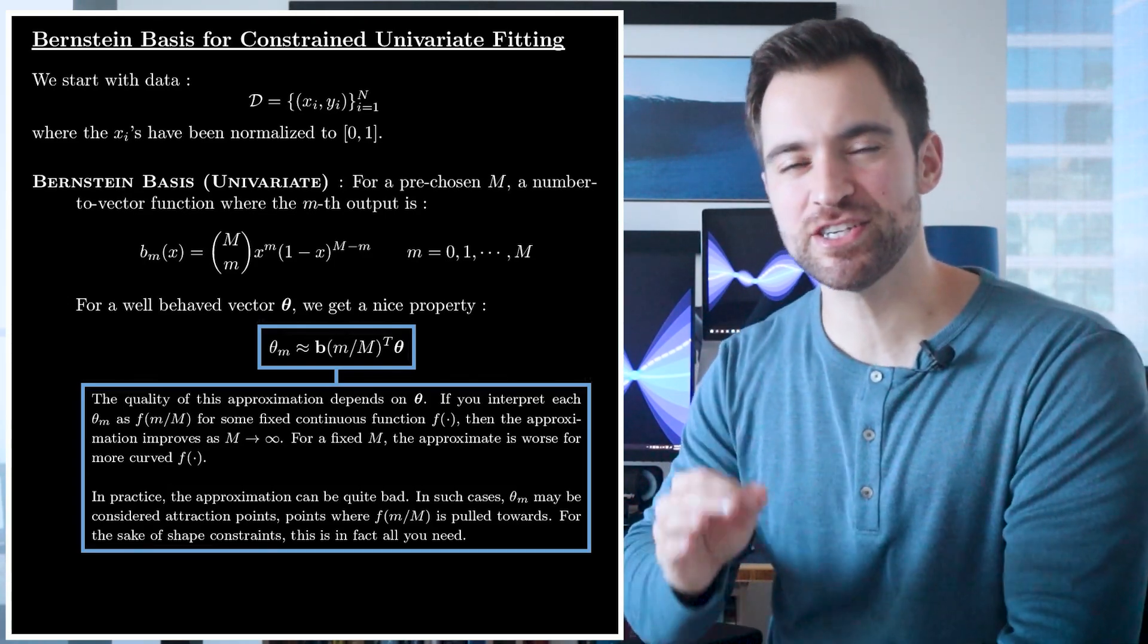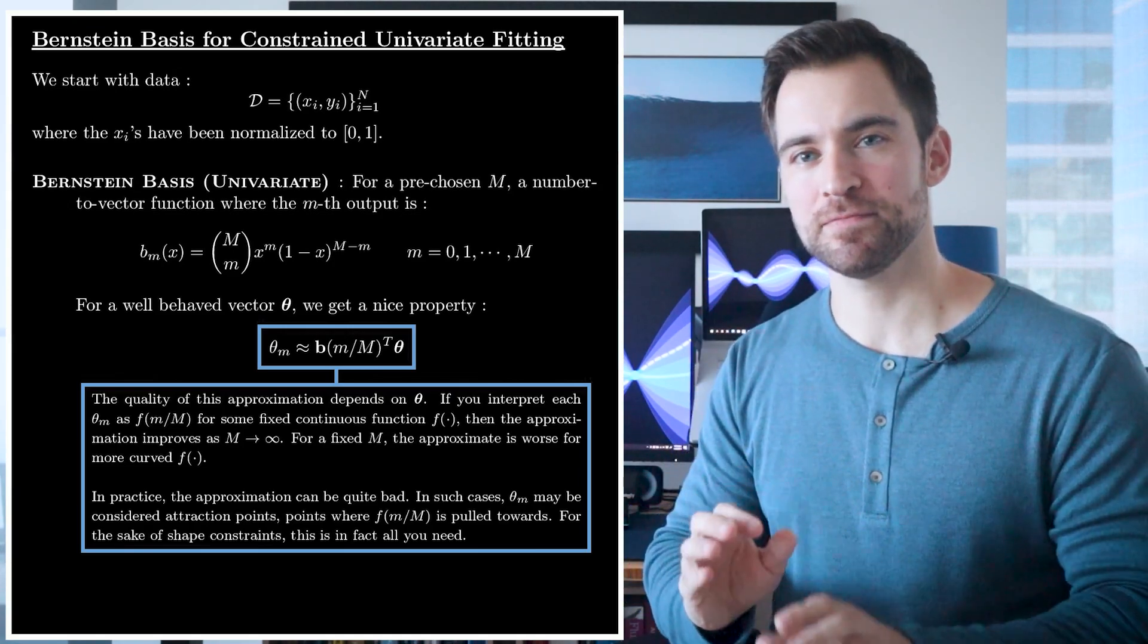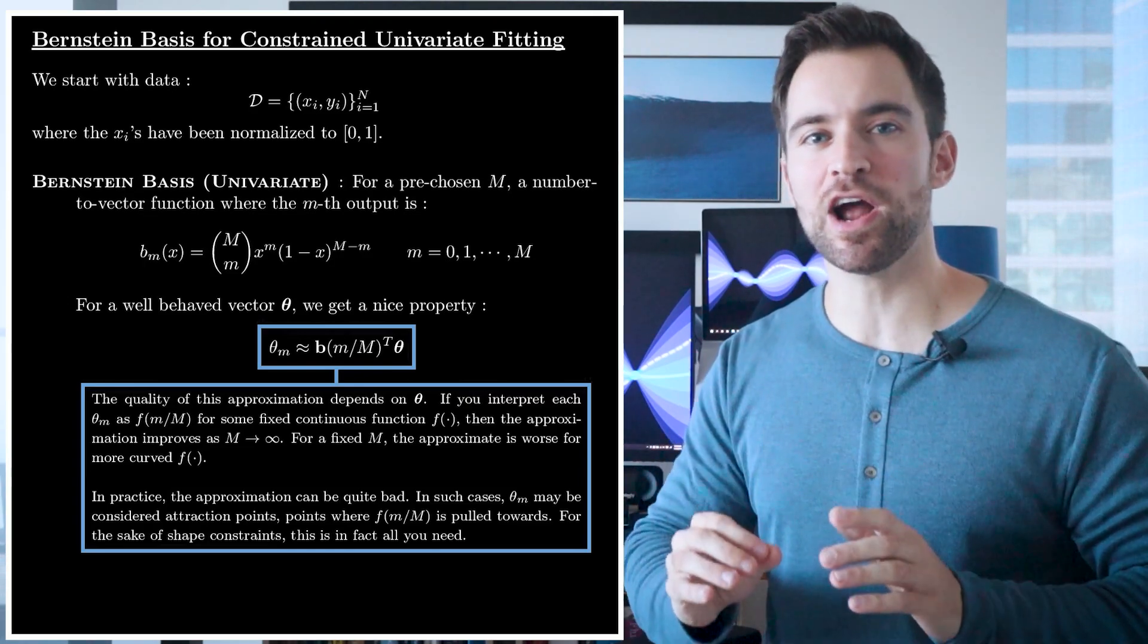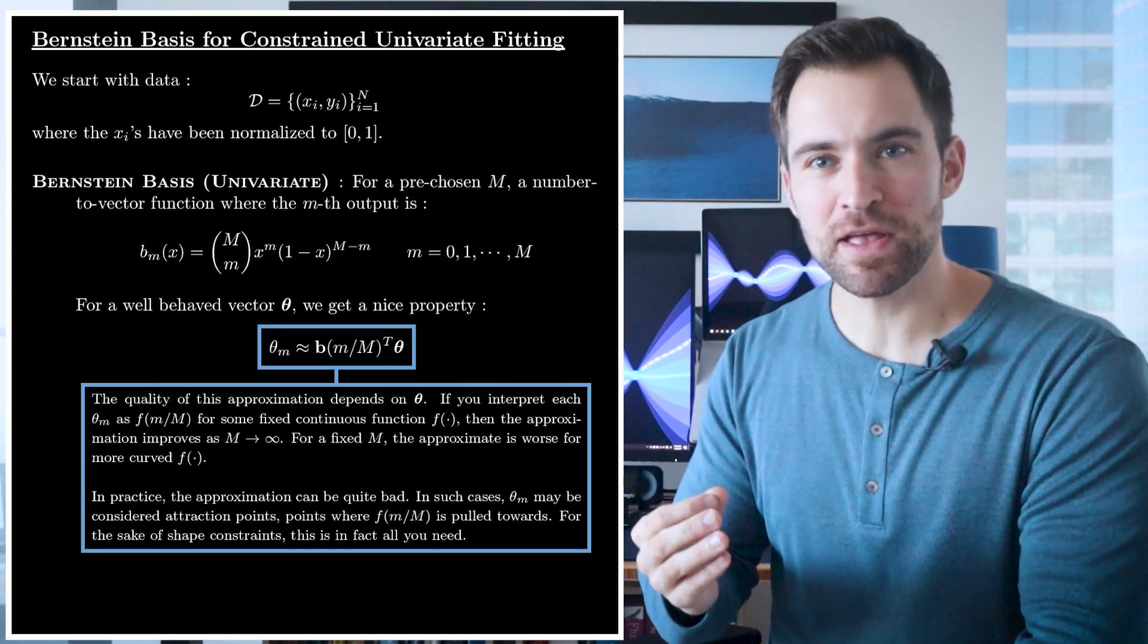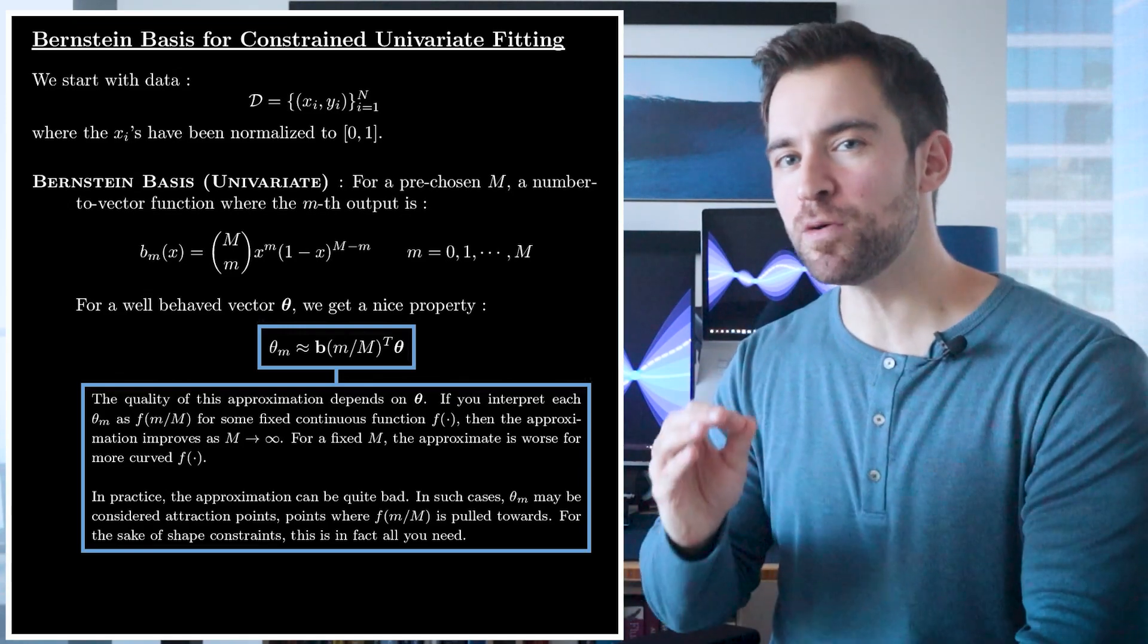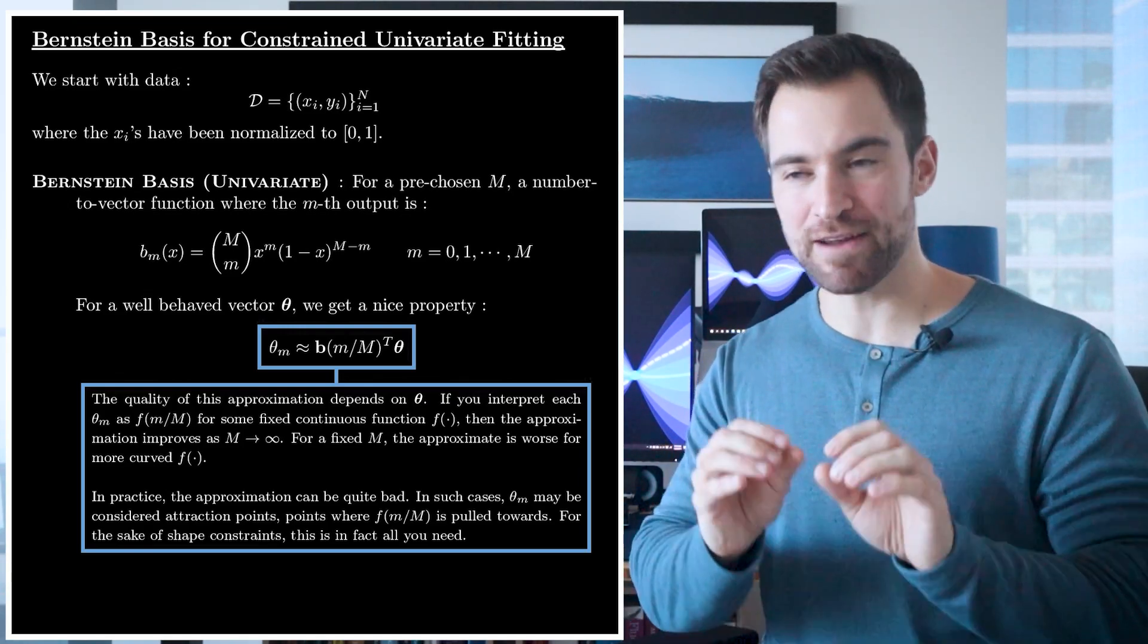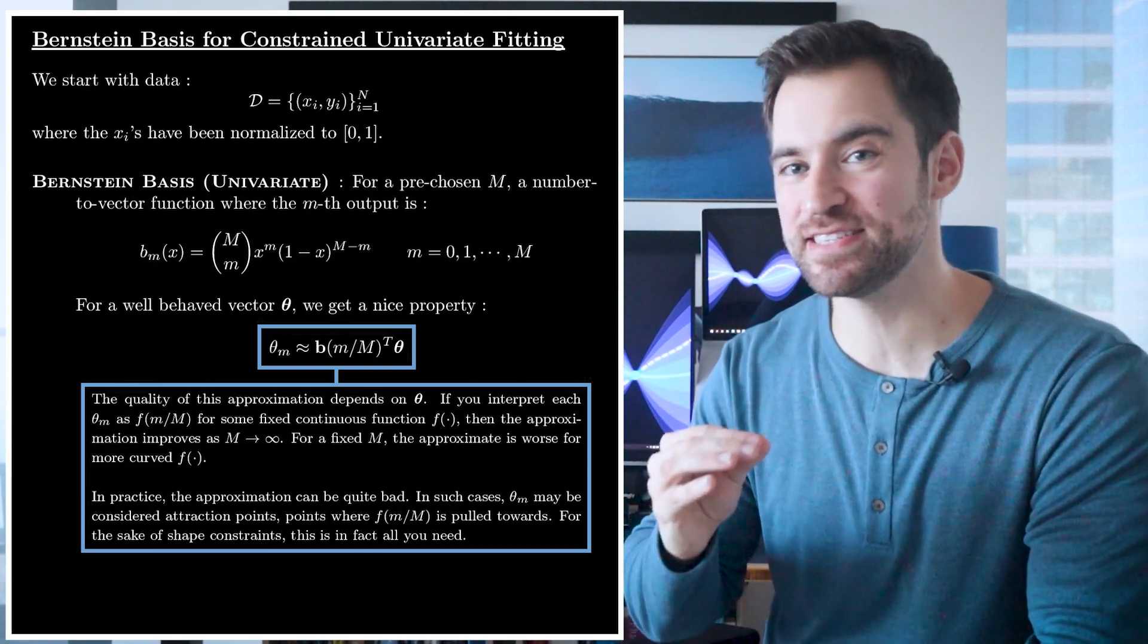But in practice, you may find this approximation to be pretty bad. That happens if you're trying to model something complicated. In this case, you should consider the coefficients as attractors, values where your output moves towards but can't quite reach. It can't reach them because the output function can achieve only so much curvature for a fixed m. The good news is a poor approximation doesn't prevent us from applying constraints. The same idea works if they operate merely as attractors. With that, I can say why this is useful for modeling.